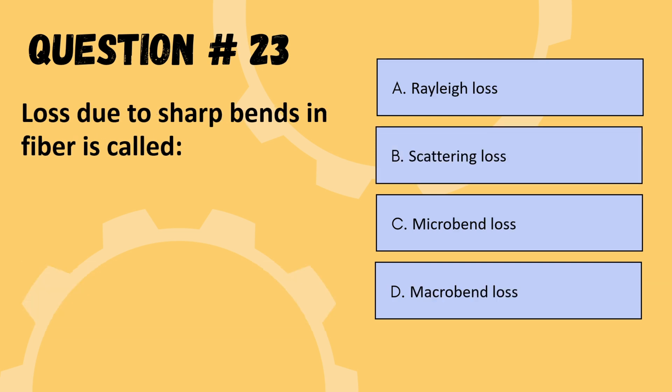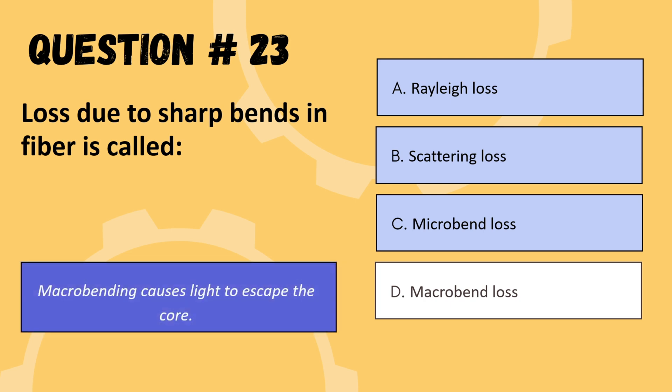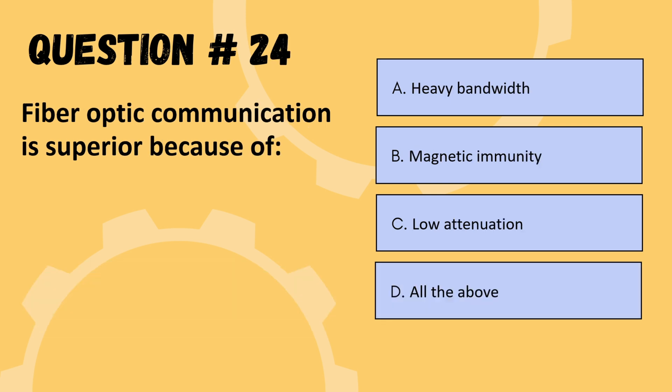Next question: loss due to a sharp bend in fiber is called — Rayleigh loss, scattering loss, micro bend loss, or macro bend loss. The correct option is D: macro bend loss.